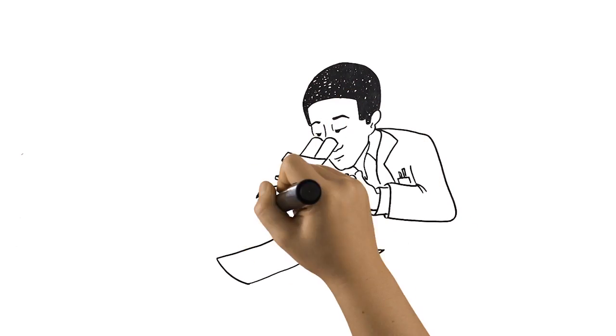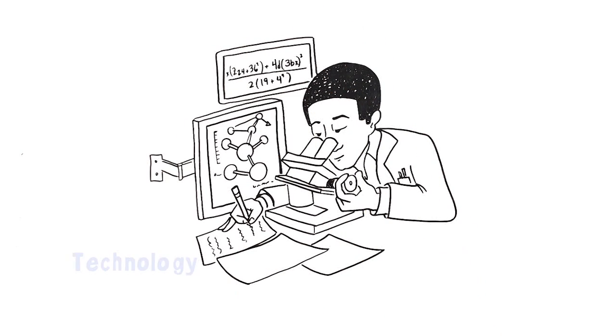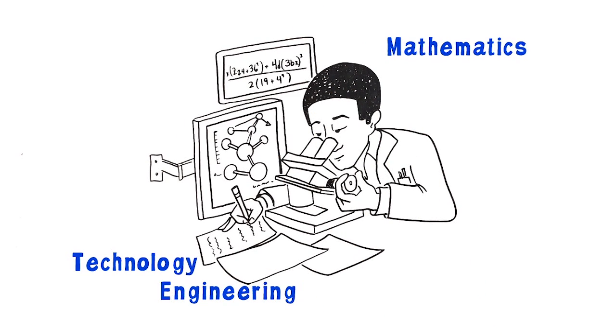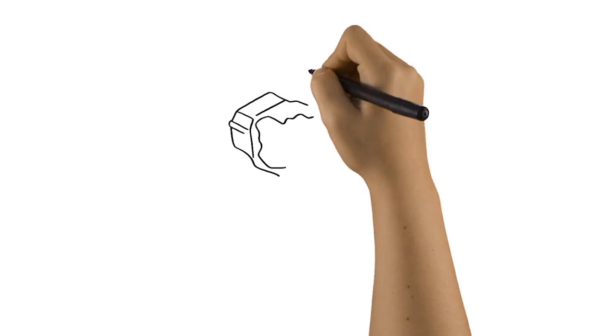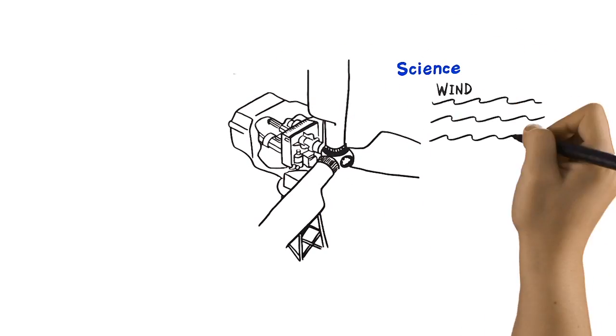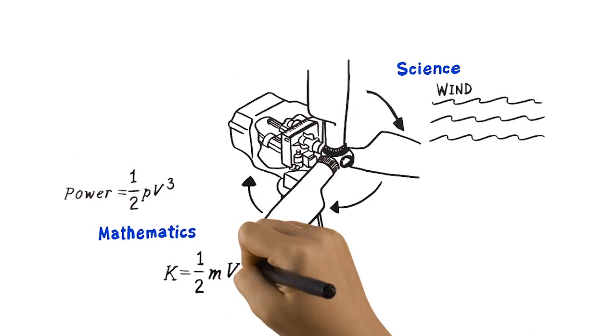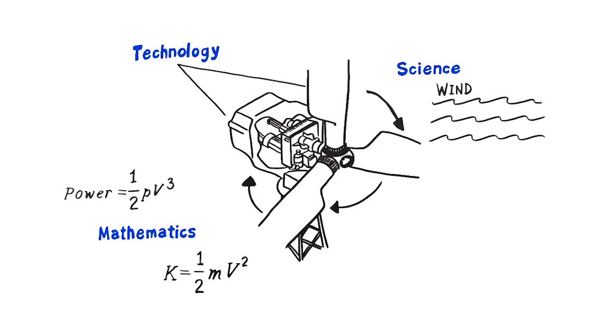After all, in the real world, science relies on technology, mathematics, and engineering. And engineering depends on findings from science, the application of mathematics, and the use of technological tools.